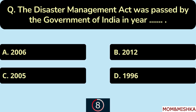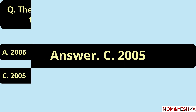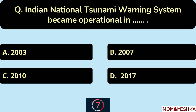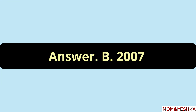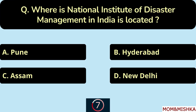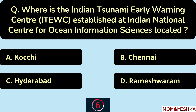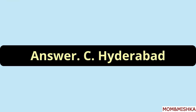The Disaster Management Act was passed by the Government of India in year 2005 — option C. The Indian National Tsunami Warning System became operational in year 2007 — option B. The National Institute of Disaster Management in India is located in New Delhi — option D. The Indian Tsunami Early Warning Center, established at the Indian National Center for Ocean Information Sciences, is located in Hyderabad — option C.